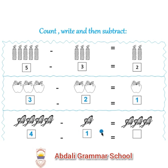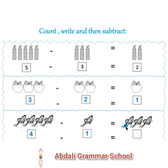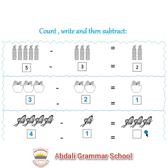4 minus 1 is equal to 1, 2, 3. 3 butterflies are left. Here we write 3.